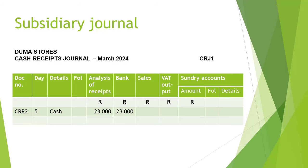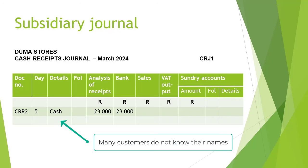If we now record this transaction in the cash receipts journal, we will firstly record the document number, which was cash register roll 2. Therefore, you will see CRR2 in the document column. Then the day was the 5th of March. In the details column, we will write 'cash', since this was sales from the cash register roll.